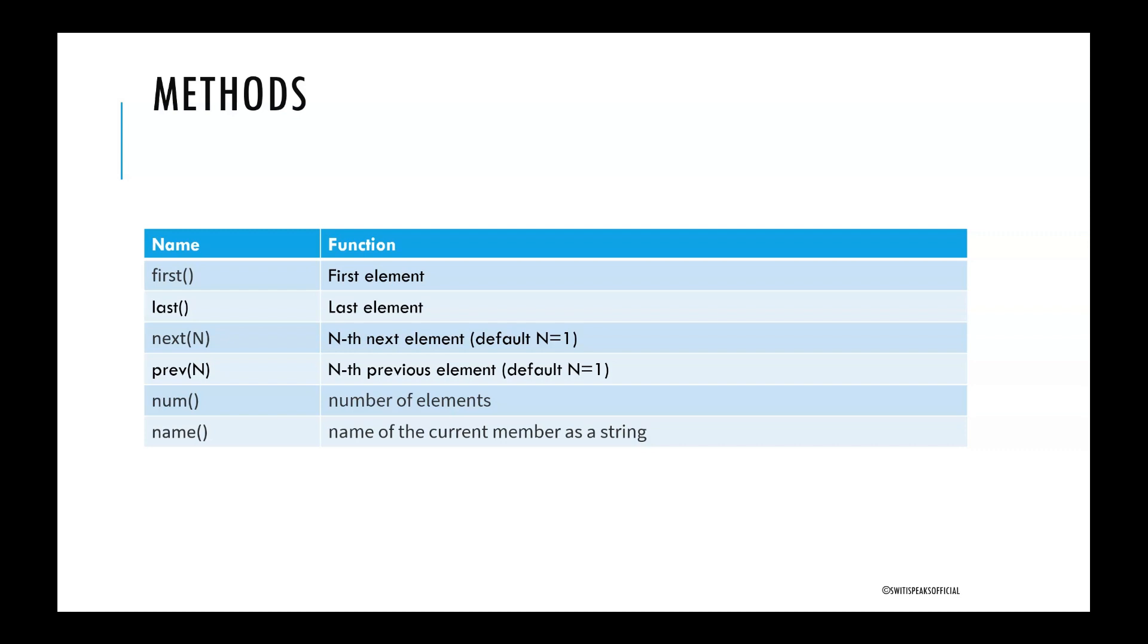And you can specify the value of n. If you don't specify anything, the default value is 1. So, if you don't specify value, the default value is 1, which means it will give the next element. If you specify n equal to 2, then it will give next to next element, like 2 elements after this.